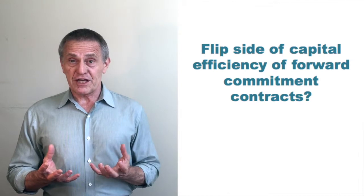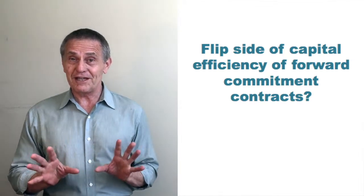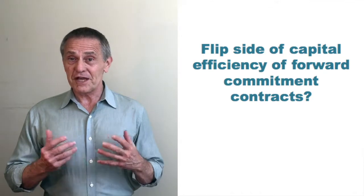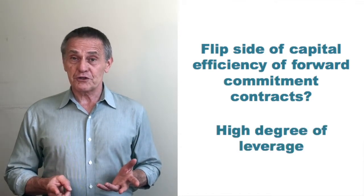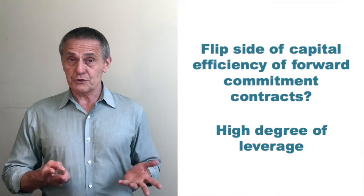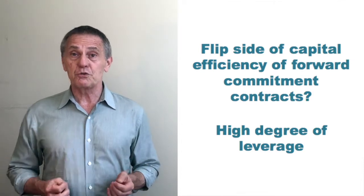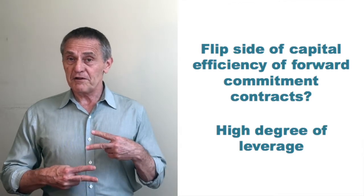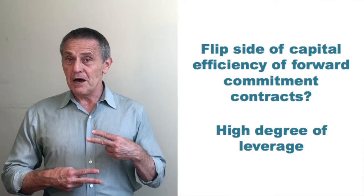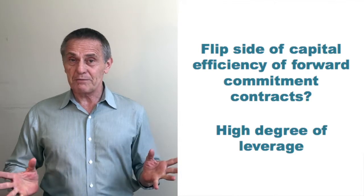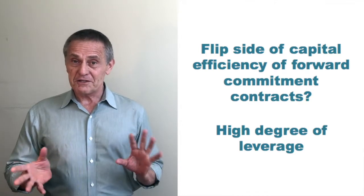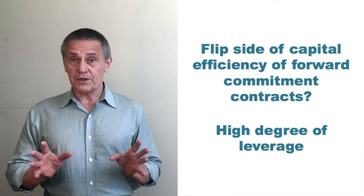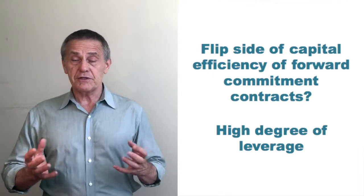That's the capital efficiency I was referring to, but note that's not an unmitigated good — because capital efficiency is another way of saying leverage. If I can establish a position with capital equal to 2% of the market exposure created, a move in my favor of 2% has doubled my money, but a movement of 2% against me has wiped me out. Capital efficiency is a characteristic of forward commitment derivatives that is a potential advantage, but comes with significant risk.